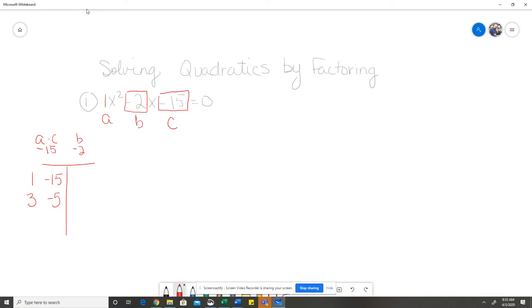So, 1 plus negative 15 will give me a negative 14. 3 plus negative 5 will give me a negative 2. So, this 3 and negative 5 is the pair I'm looking for.